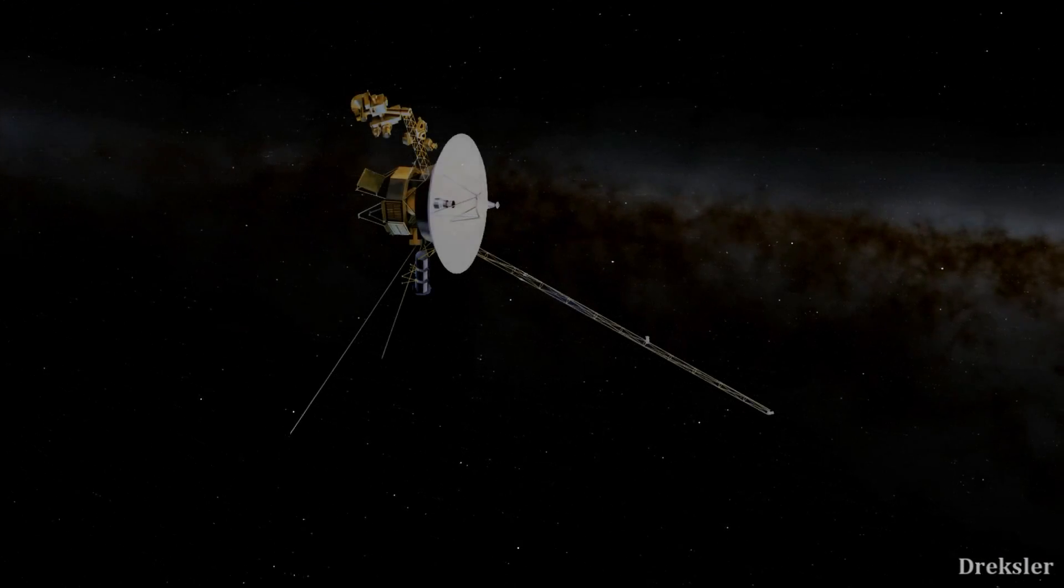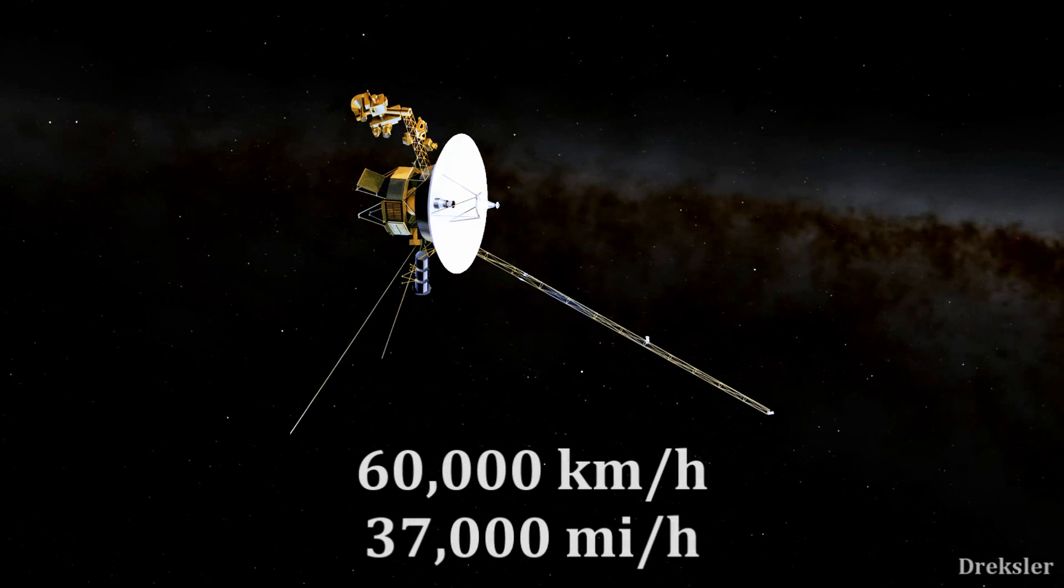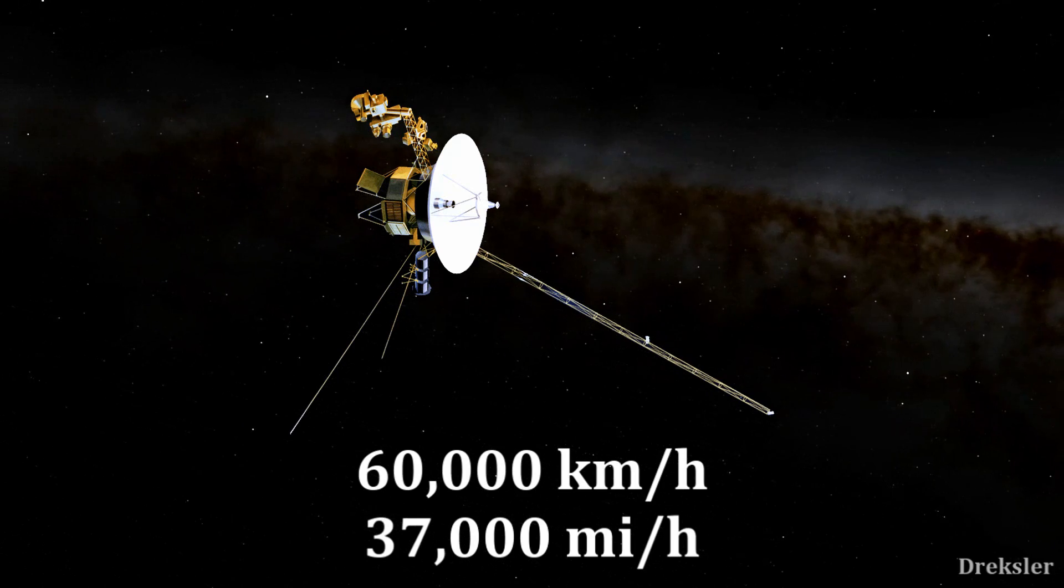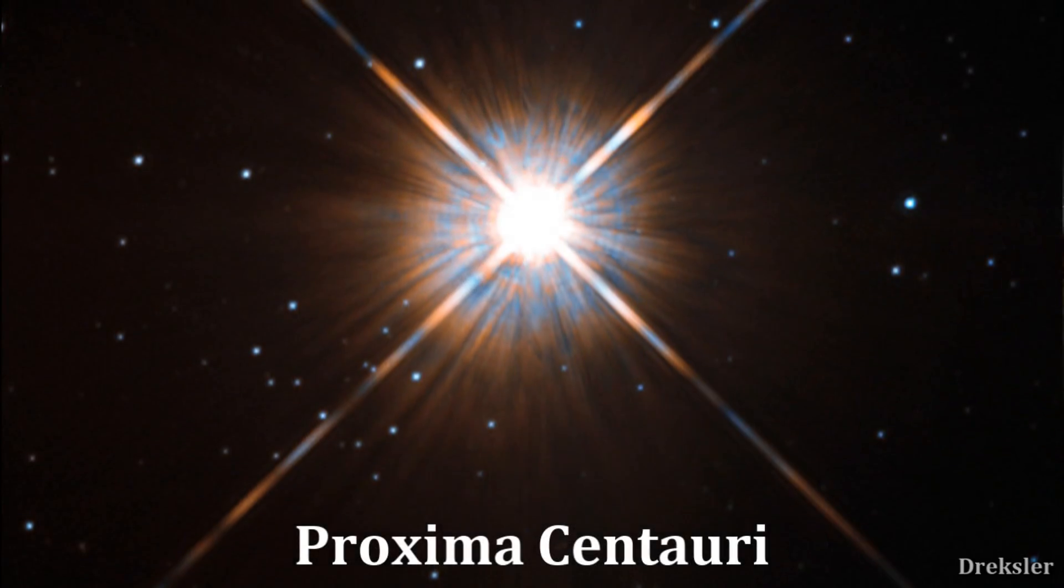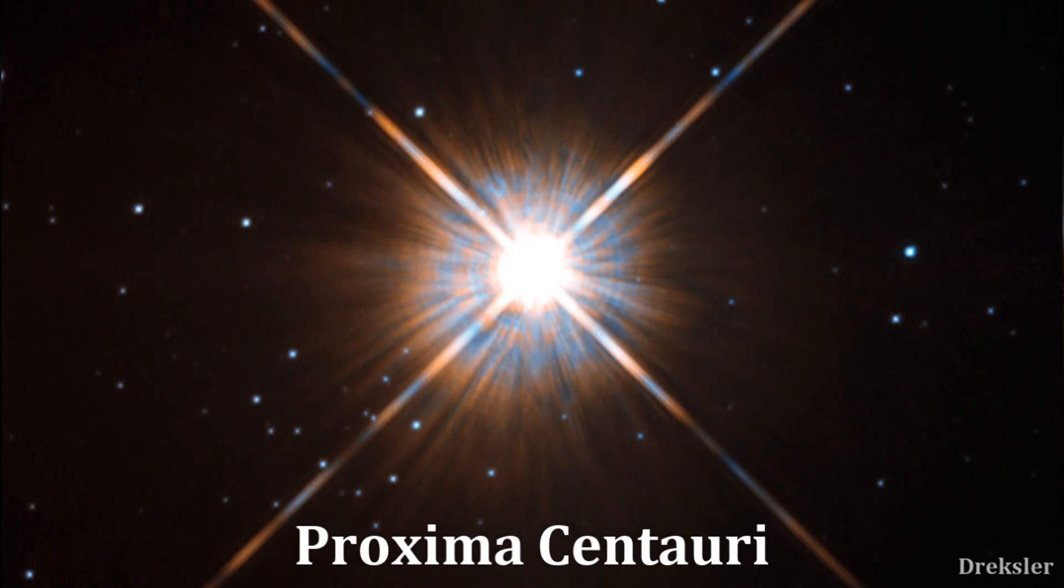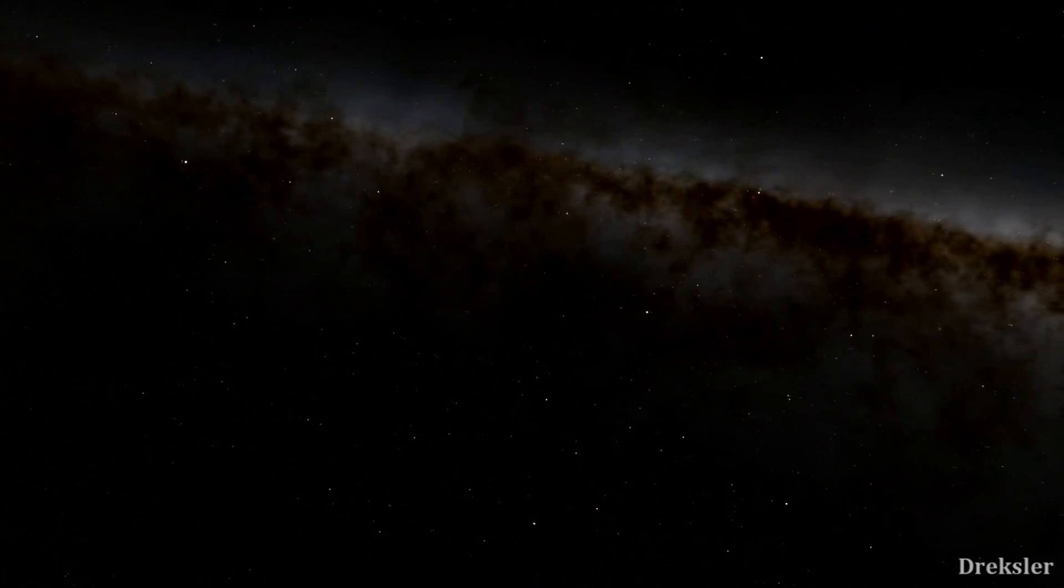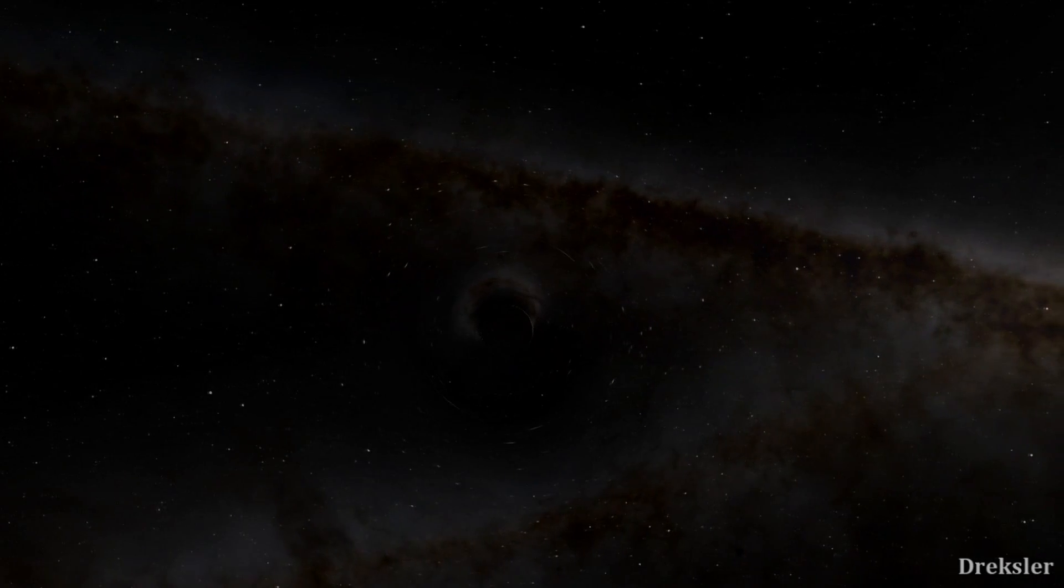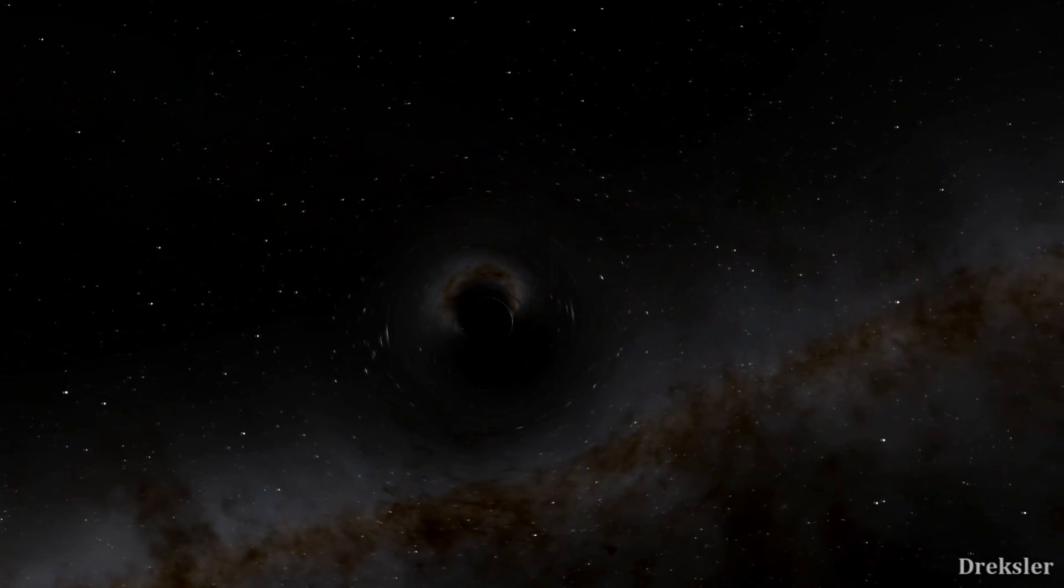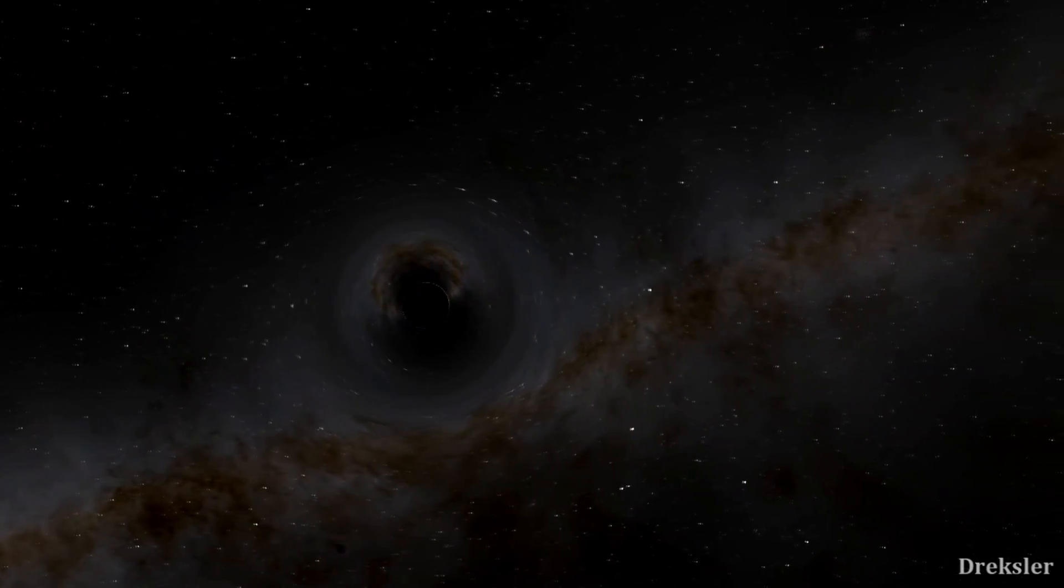Voyager 1 is the most distant human made object and it is going through space at 60,000 kilometers per hour. Now to reach the closest star which is Proxima Centauri which is 4.2 light years away it would take Voyager 1 75,000 years to reach it. Using that number to reach the closest black hole it would take Voyager 1 around 50 million years to reach the closest black hole found.